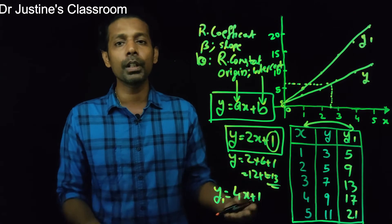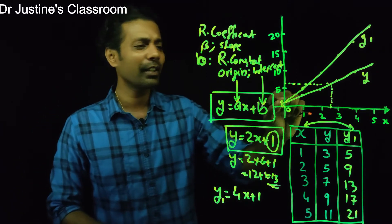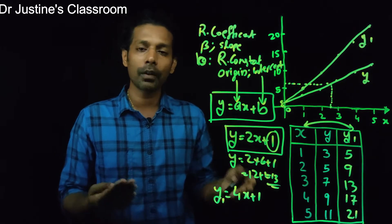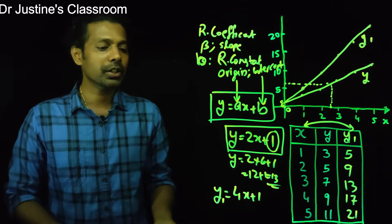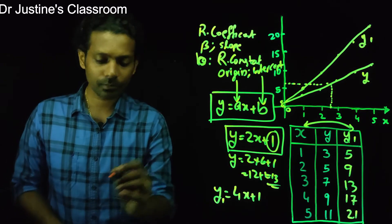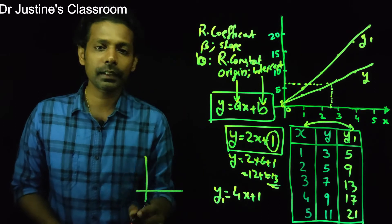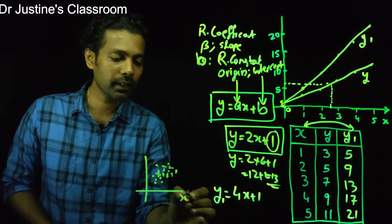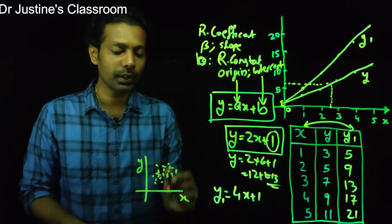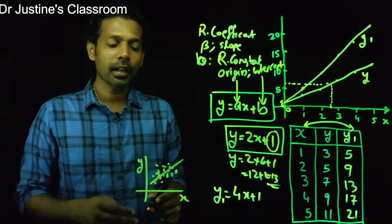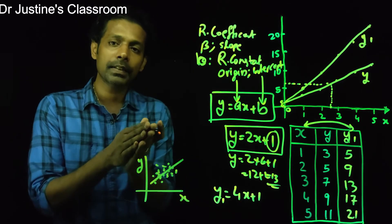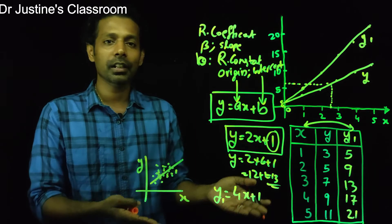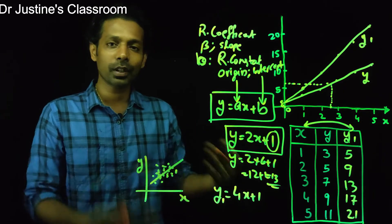In a real research condition, you won't always get a clear straight line pattern. What we do is collect data, plot a scatter plot, and try to fit a straight line. How well that straight line fits the data is the core indicator of regression analysis. If a straight line can be established, you can use the equation of a straight line to predict the dependent variable.